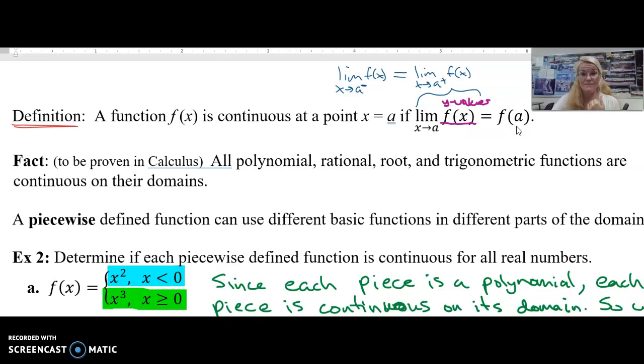And this limit needs to equal where the function is defined at a. So if a is not in your domain, f of a doesn't exist because a wouldn't be in the domain. So this piece is basically saying a must be in the domain of your function. So those removable discontinuities that we had, those holes in the lines, the limit from the left and the limit from the right were the same, but if you had a hole, it's because that value of a wasn't in your domain. So fact to be proven in calculus, all polynomial, rational, root, and trig functions are continuous on their domains. So we can just take for granted they're all continuous for each a, for each x equal a in their domains. So what are the ones that we have to worry about?